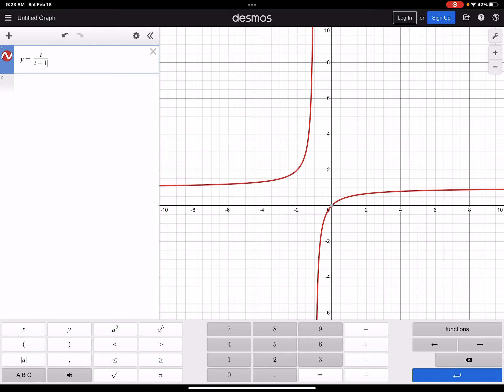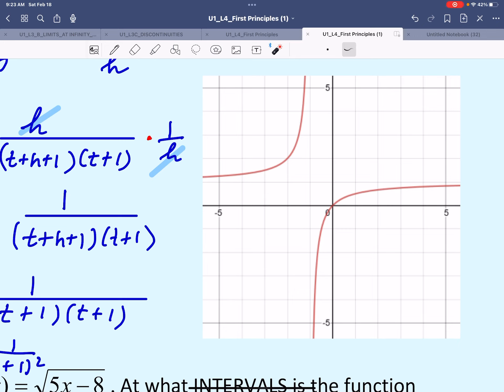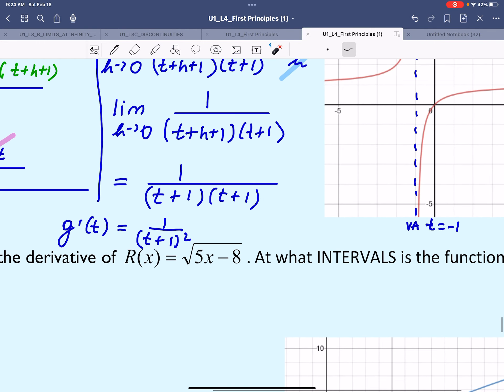What we are going to do is check where this function will have the derivative undefined. As you can see, there will be a vertical asymptote at t = -1, which means at this point we're unable to draw a tangent line. Obviously this would be non-differentiable.